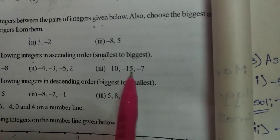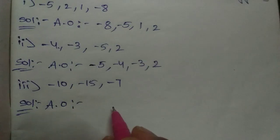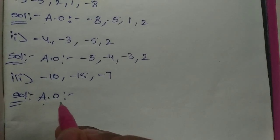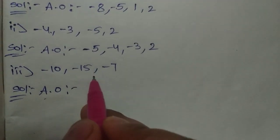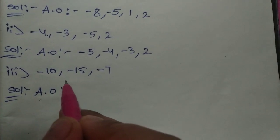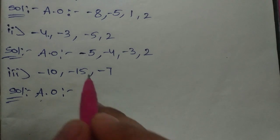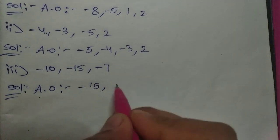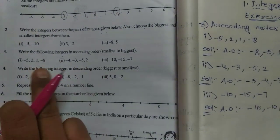Third question: minus ten, minus fifteen, minus seven. Here all three are negative only. The one having the biggest digit with the negative sign is the smallest integer. So minus fifteen is the smallest, next is minus ten, next is minus seven. Ascending order finished — clearly understood.